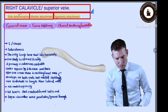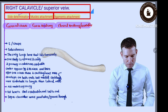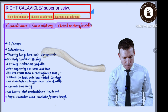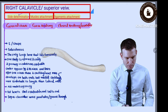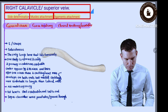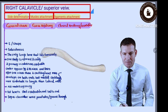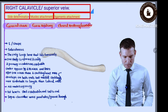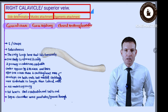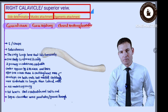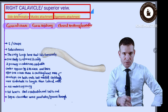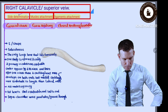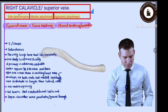Let's come to our actual topic — the right clavicle, superior view. We will be discussing first the general characteristics of this bone, then gross anatomy in detail, and finally clinical anatomy, including correlation with ossification.